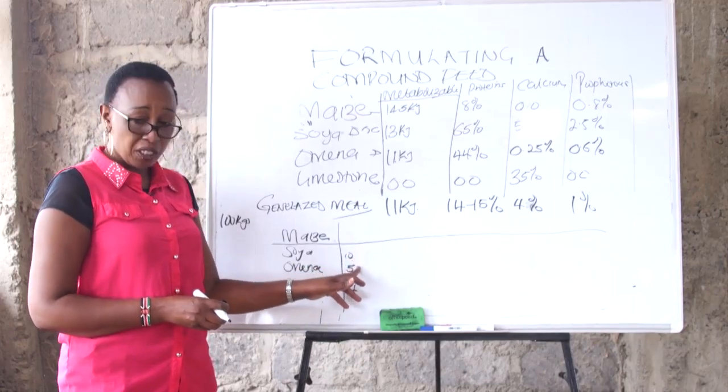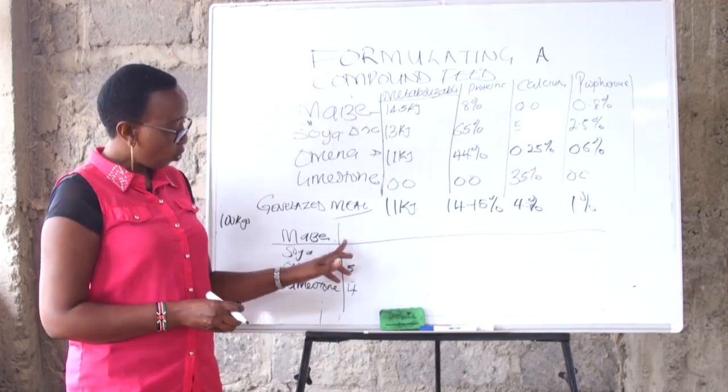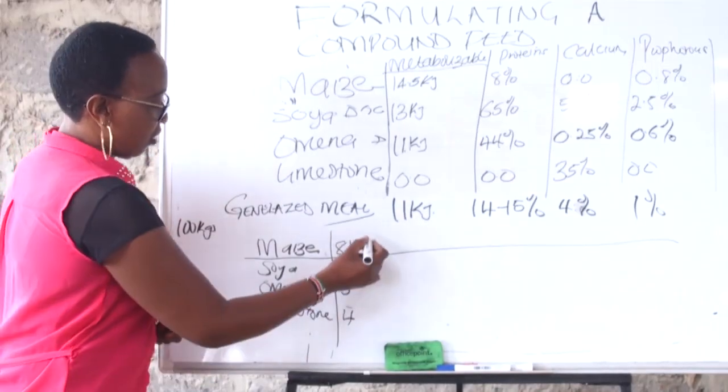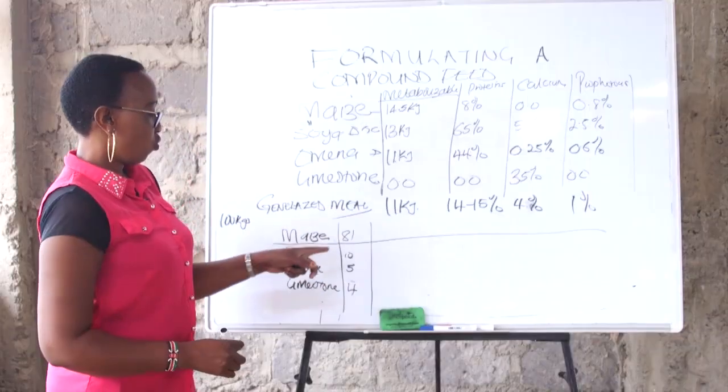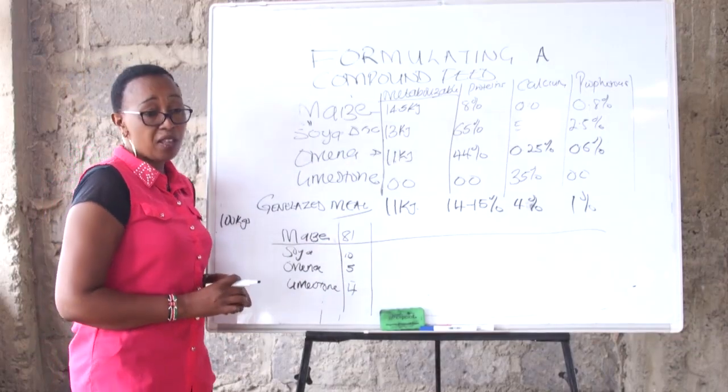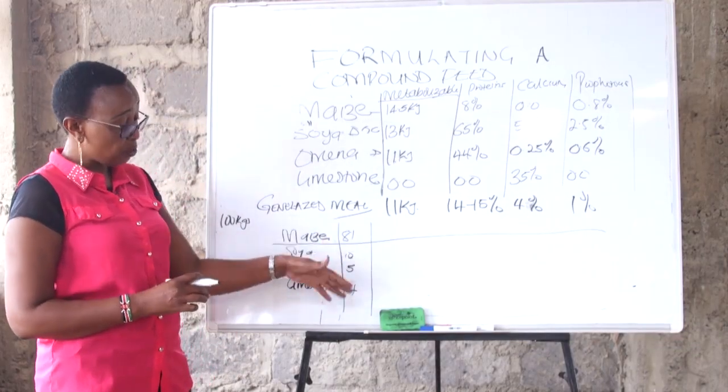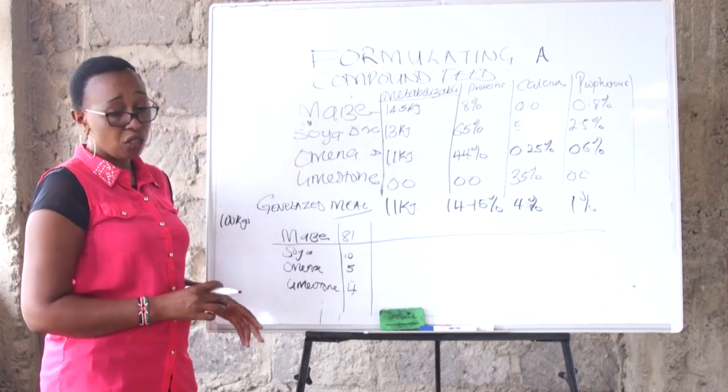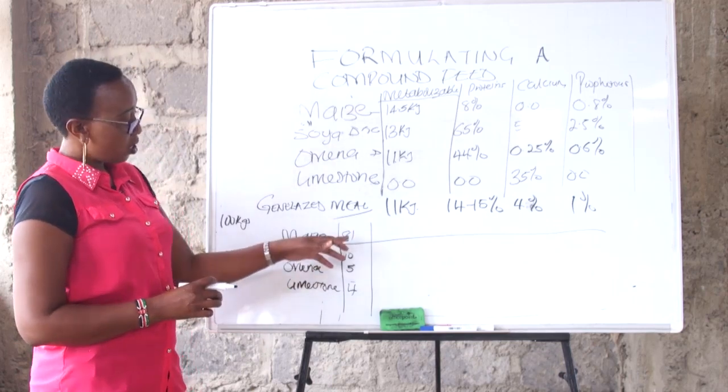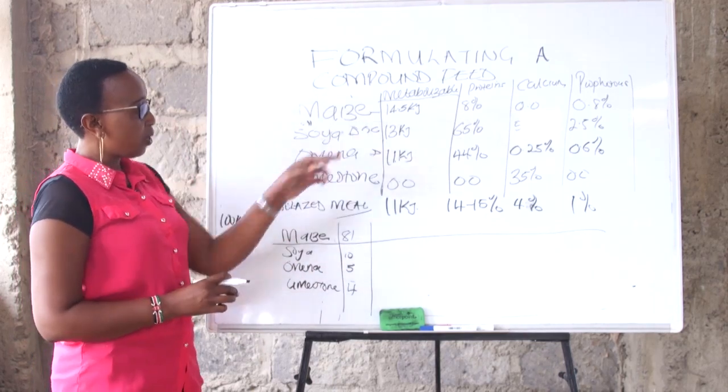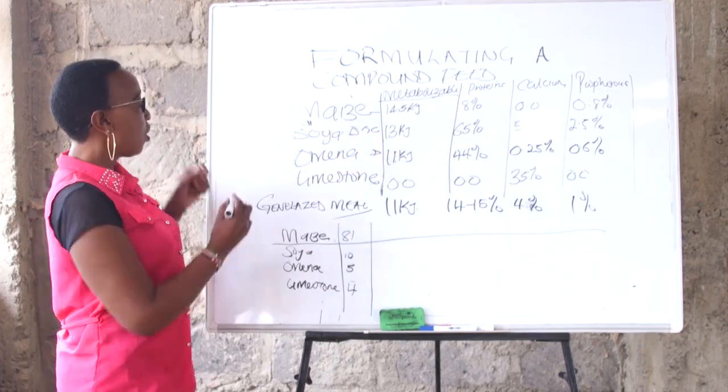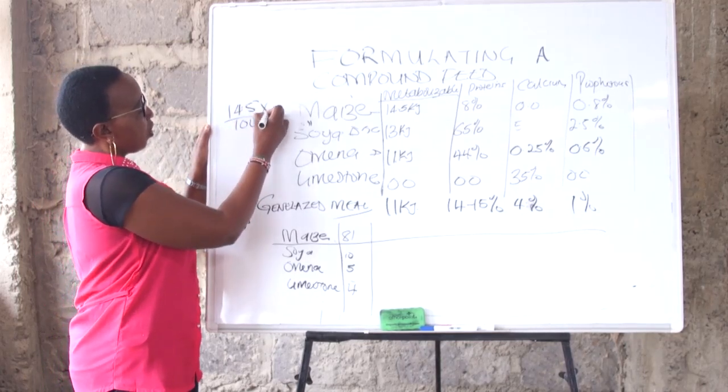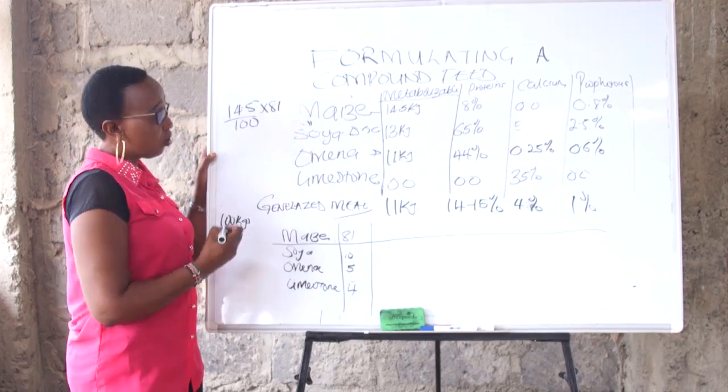We said we need 15 percent of the feed to be protein and we just need 4 percent calcium. So maize, we need 81. Let's see whether this is going to give us what we are looking for. We worked it the way a layman would do it: 81 kilograms of maize, and maize is giving us 14.5 percent.